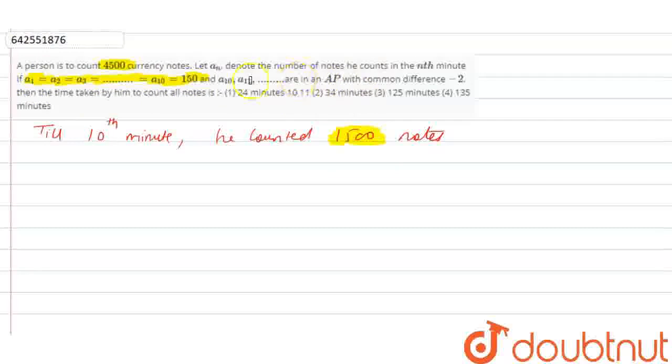After that, till Nth term, it was an AP with common difference minus 2. Till 10th minute he counted 1500 notes, so the left notes were 4500 minus 1500 is equal to 3000.